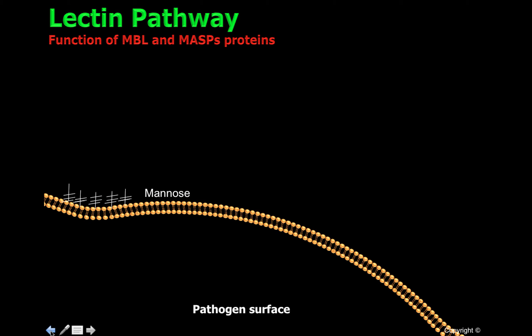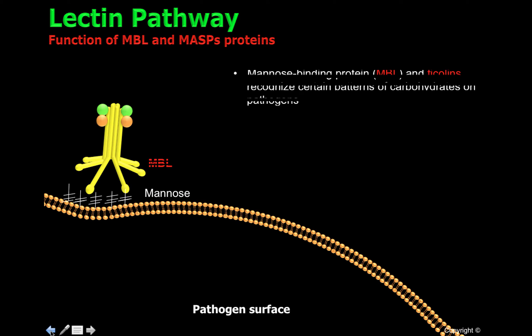The lectin pathway starts when MBL, or mannose binding protein, and ficolins — which are not shown in this video — recognize certain patterns of carbohydrates on pathogens. Here, MBL is recognizing mannose patterns found in pathogens.